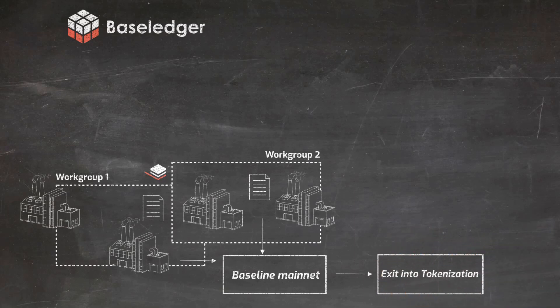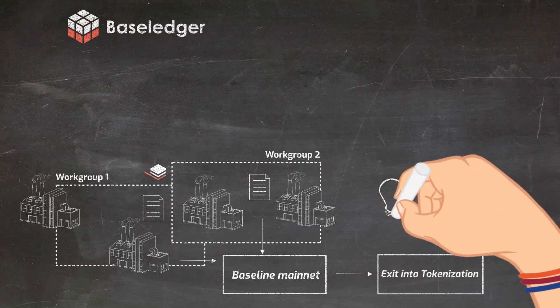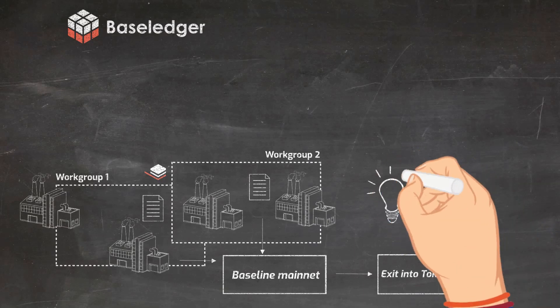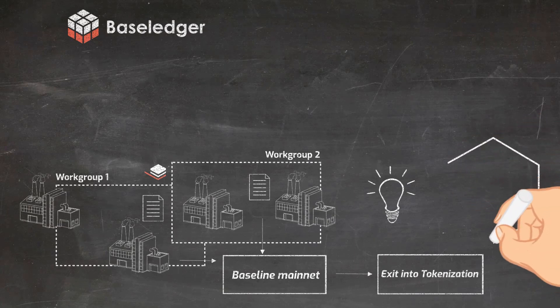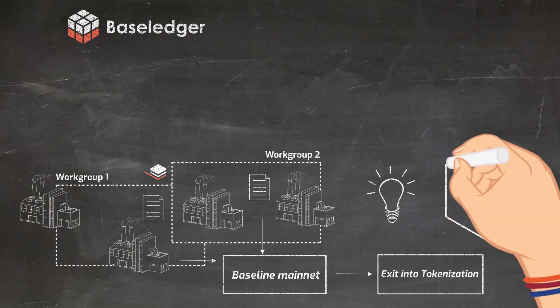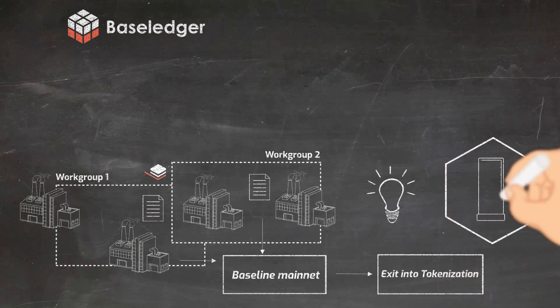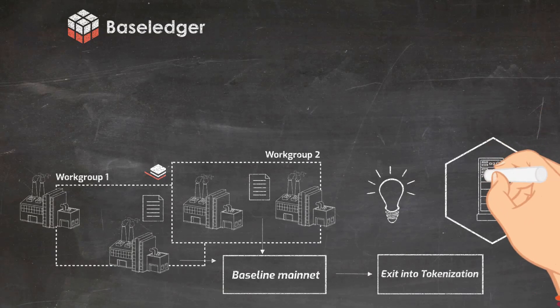The idea of Baseledger evolved around the question: what is the right mainnet? And this question cannot be answered easily, as for example Ethereum may be great for tokenization and DeFi, but perhaps not perfect for enterprise baselining when it comes to costs, performance and data compliance considerations.